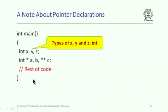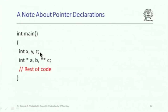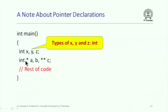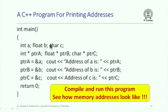A note about declarations: often we write int x, y, z instead of int x; int y; int z, meaning all three have type int. But when you write int* a, b, **c, it is not the case that both a and b are int*. Here a is int*, b is int, and c is int**. The star does not associate with subsequent variables in a comma-separated declaration.